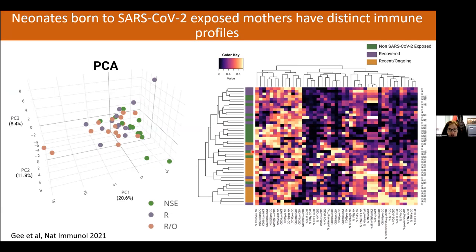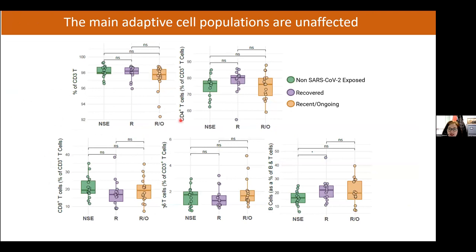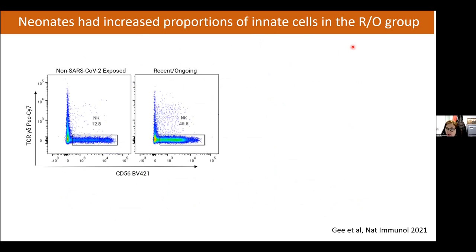Unbiased clustering also showed segregation, with babies born to mothers with recent or ongoing infection tending to cluster away from unexposed or recovered groups. However, the main T cell and B cell populations did not appear significantly different across the groups — not much change was seen in general T cell or B cell populations between non-exposed, recovered, and recently infected mothers' infants.